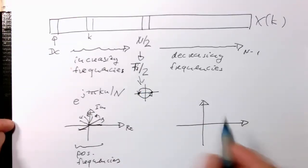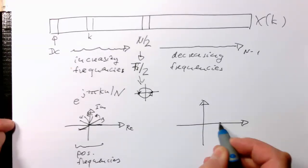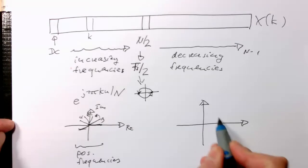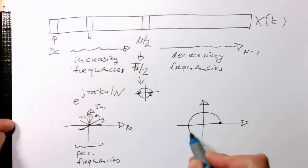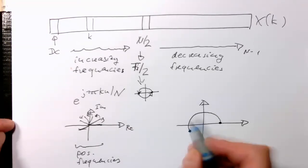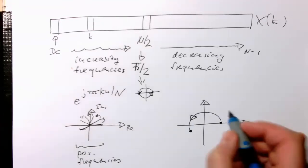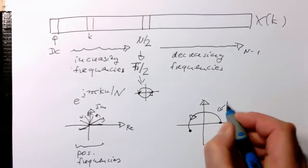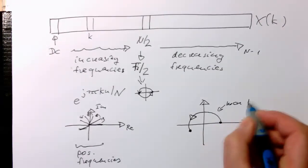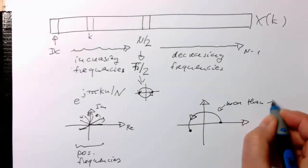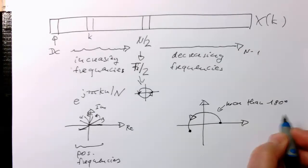So what we're getting here, for example, is something like that. We are jumping more than 180 degrees.